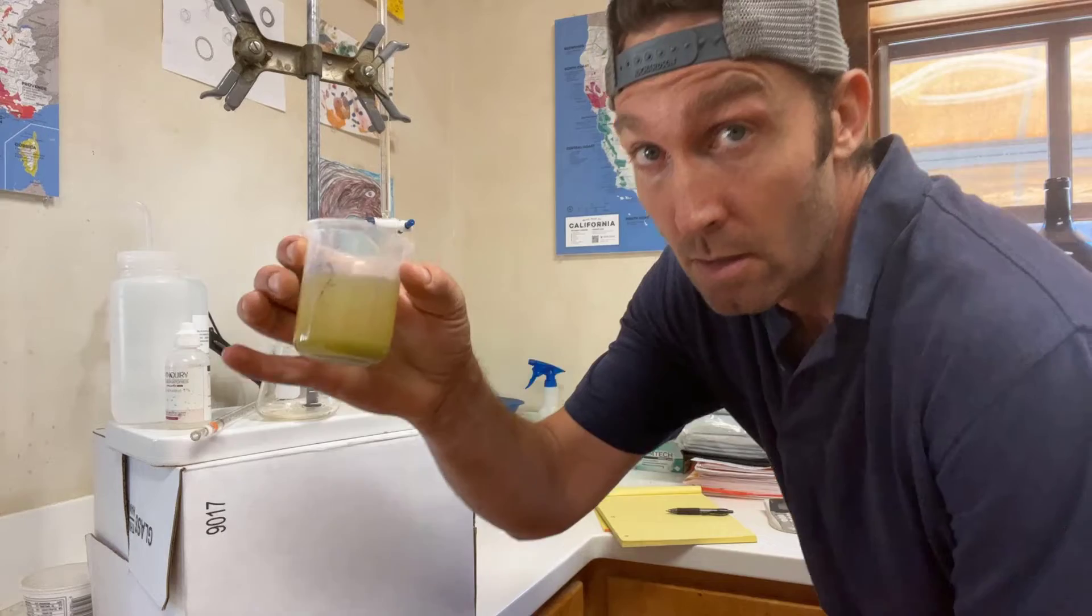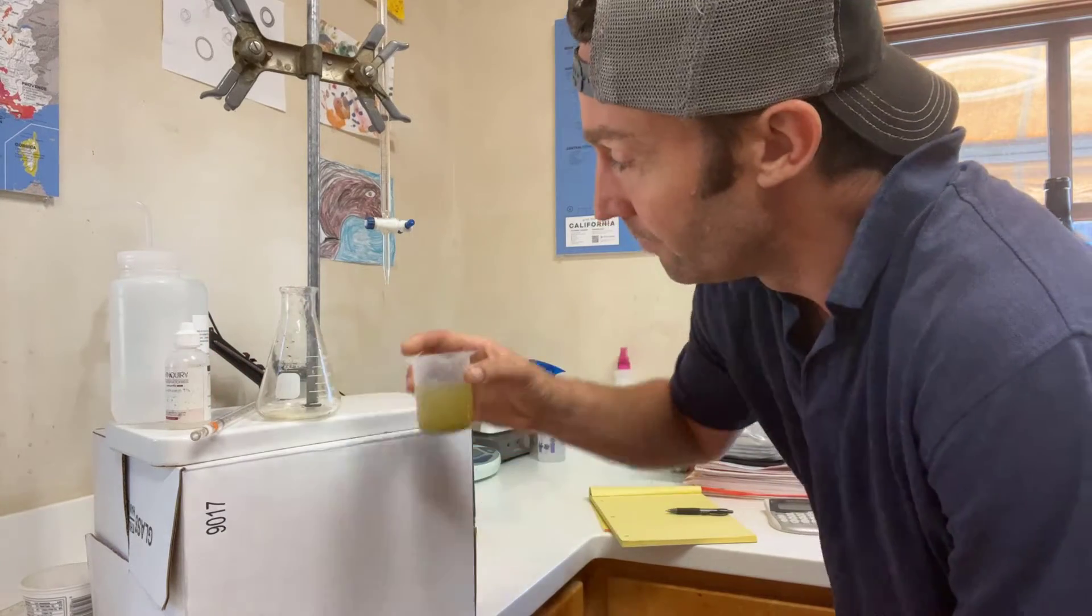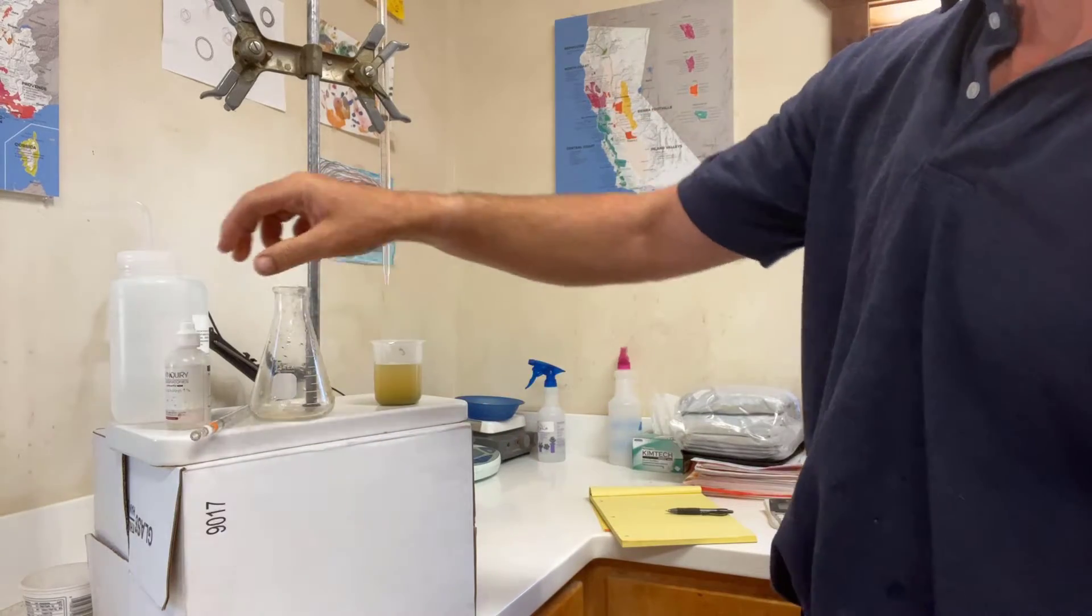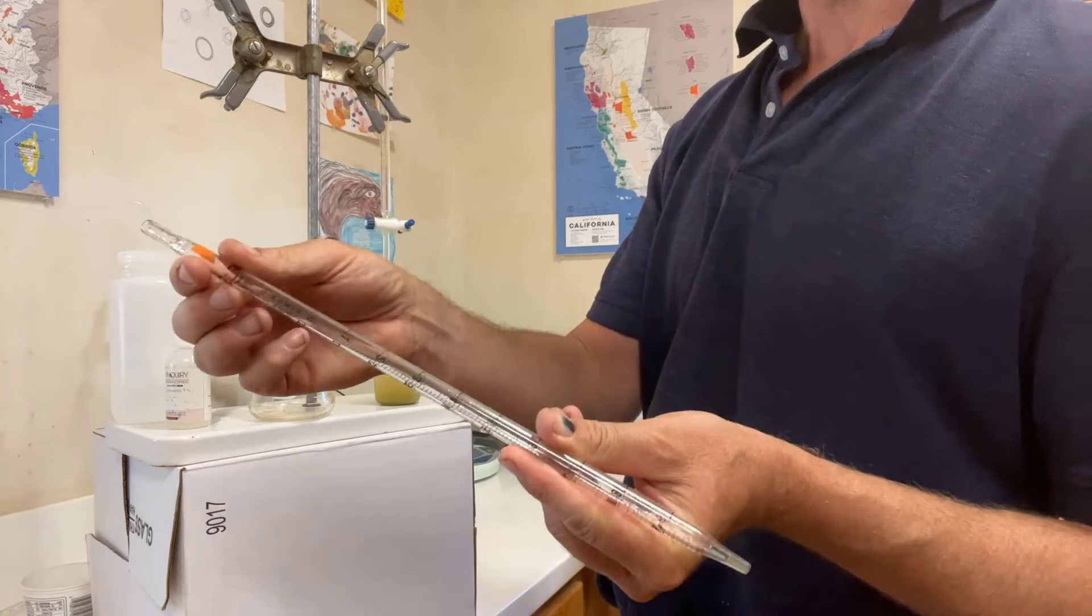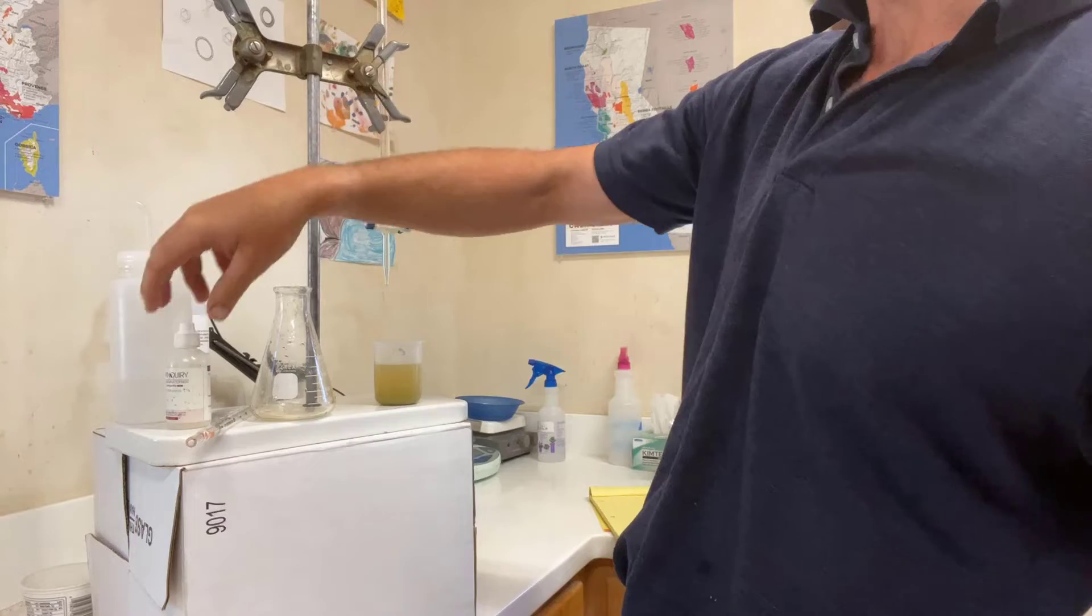So I've got a juice sample. This is chardonnay juice, not very ripe. TA is gonna be quite high. A little flask. Got a pipette to accurately deliver five milliliters. It's important that this is quantitative so the calculations work in the end.